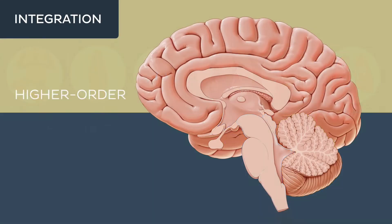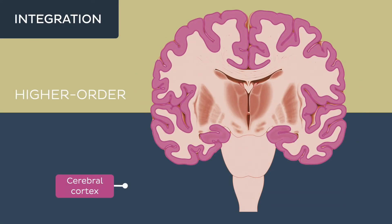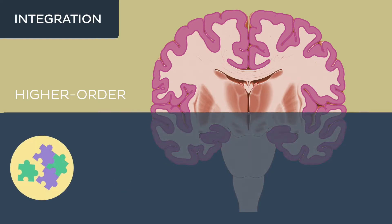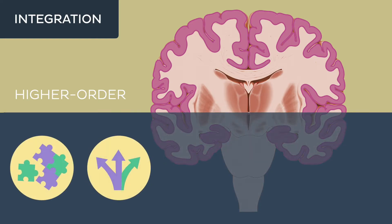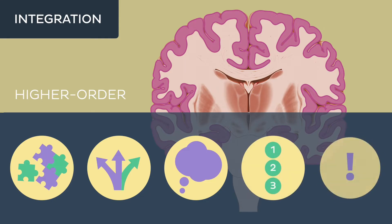Higher order integrative processes, on the other hand, occur primarily in the cerebral cortex and involve critical thinking, decision making, memory recall based on past experiences, and executive functions like planning and attention. These processes contribute to logical reasoning and goal-directed behaviour.